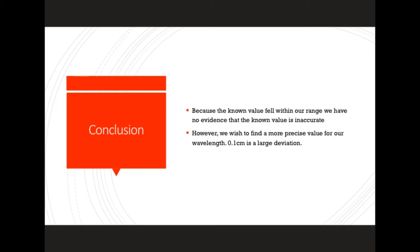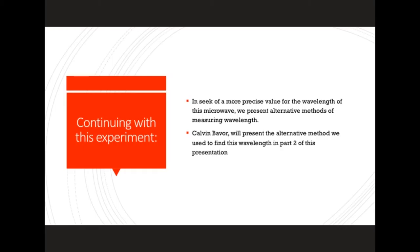If you go back to the analogy of radio wavelengths and your car stereo, this three percent can mean the difference between pop and country or whatever other station. Large deviations such as this are not good when dealing with electromagnetic radiation, as their applicability depends on the preciseness of knowing the wavelength. The experiment was not over with just this standing wave. In seek of a more precise value, we're going to present alternative methods of measuring wavelength. My partner Calvin Bavor will present the alternative method in part two of this presentation.